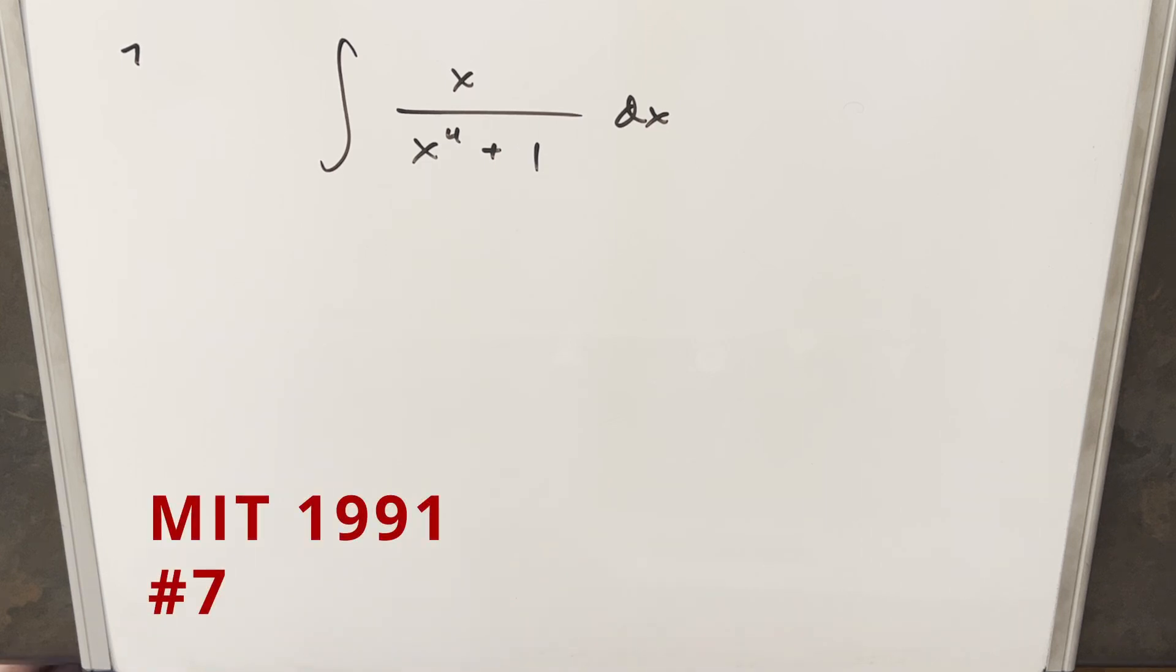Okay, we have here to take another integral from the MIT integration B 1991 problem 7. We have the integral of x over x to the 4th plus 1 dx.